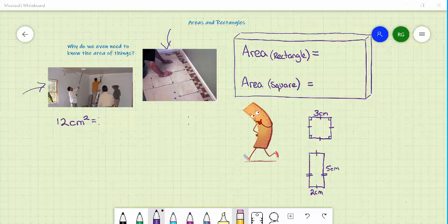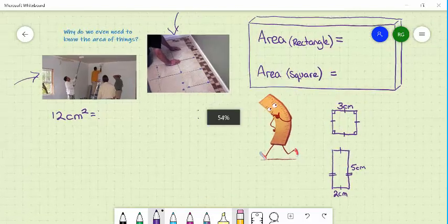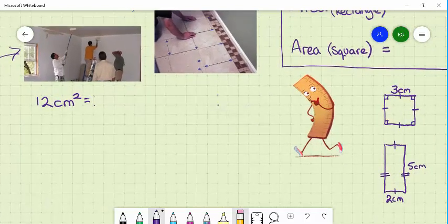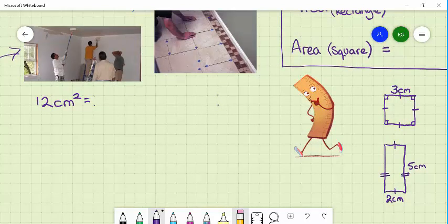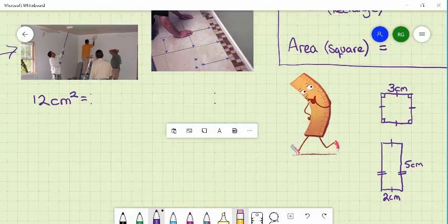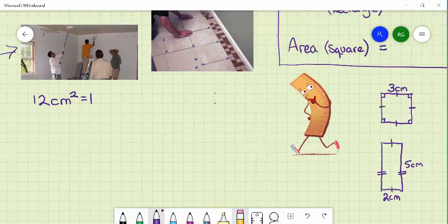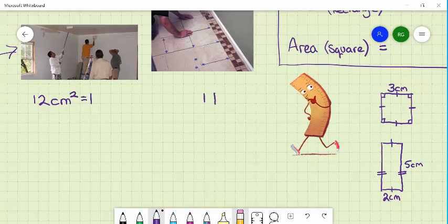The first example I'm going to show you is here. How many different ways can we make a twelve square centimetre shape or twelve centimetres squared? A really simple one is to simply have twelve of these little squares.